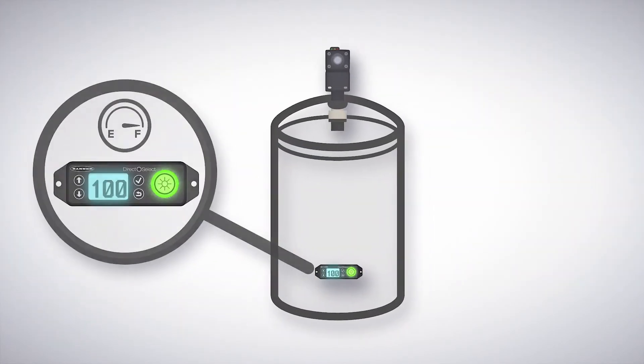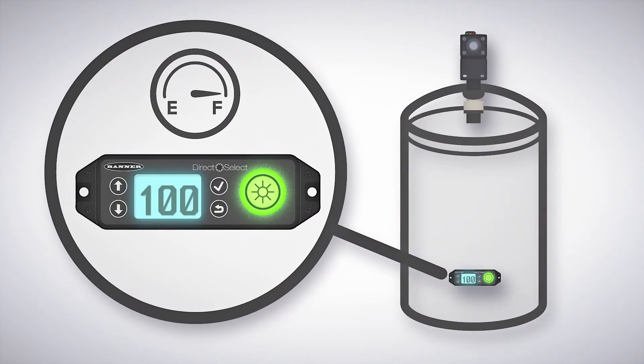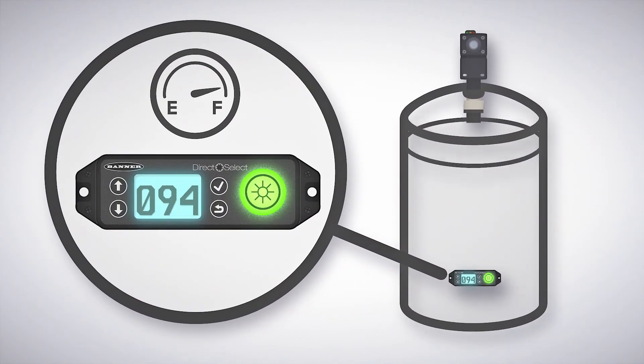Here, a DirectSelect is being used to indicate the amount of liquid in the tank. As the available volume changes, the LCD display reflects that.